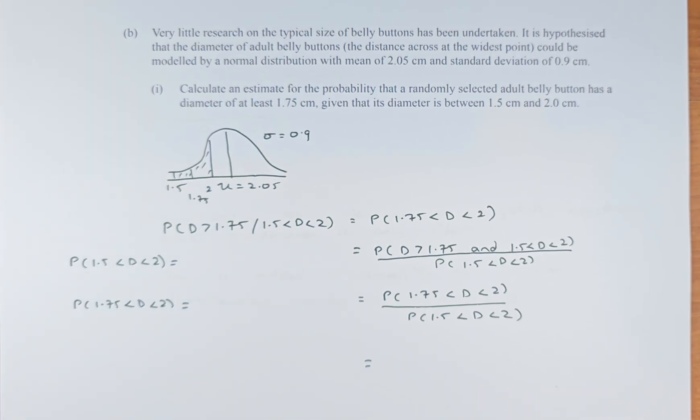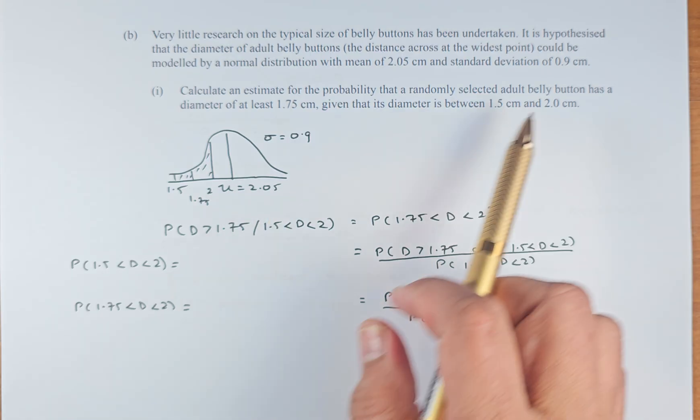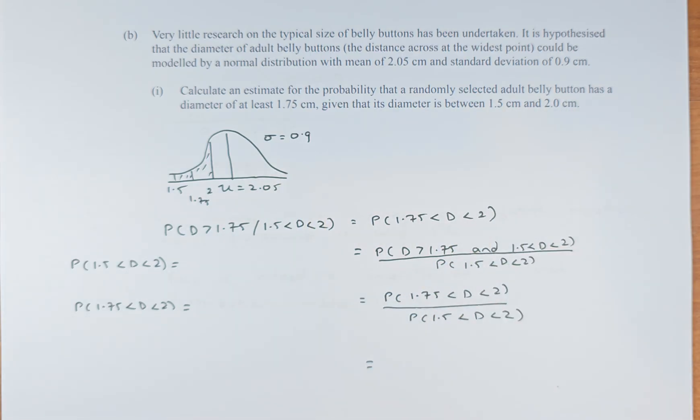Very little research on the typical size of belly button has been undertaken. It is hypothesized that the diameter of the adult belly button could be modeled by a normal distribution with a mean of 2.05 and a standard deviation of 0.9. Calculate the estimate for the probability that a randomly selected adult belly button has a diameter of at least 1.75 given the diameter is between 1.5 and 2 cm. So this is the conditional probability.